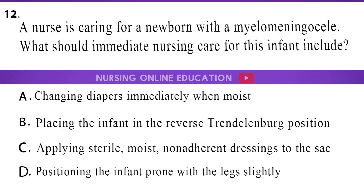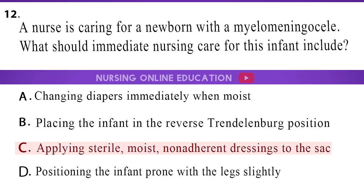Question 12: A nurse is caring for a newborn with a myelomeningocele. What should immediate nursing care for this infant include? A. Changing diapers immediately when moist. B. Placing the infant in the reverse Trendelenburg position. C. Applying sterile, moist, non-adherent dressings to the sack. D. Positioning the infant prone with the legs slightly elevated. The answer is option C: Applying sterile, moist, non-adherent dressings to the sack.